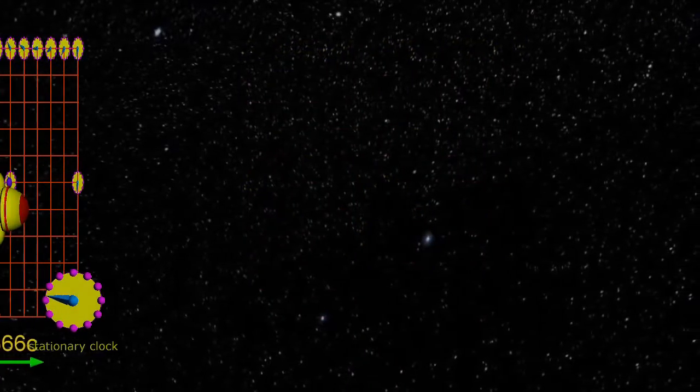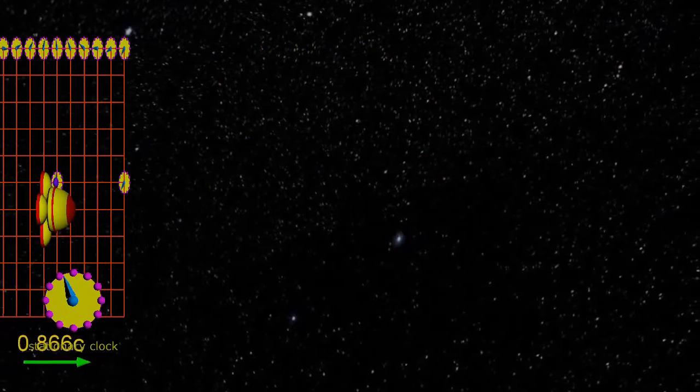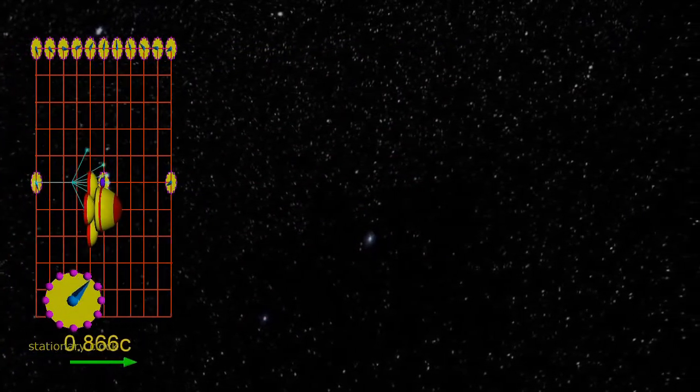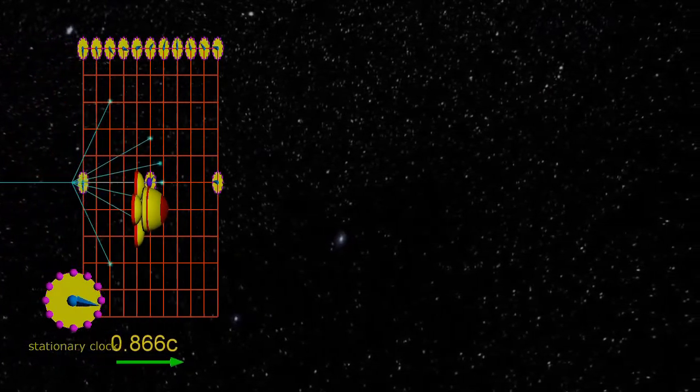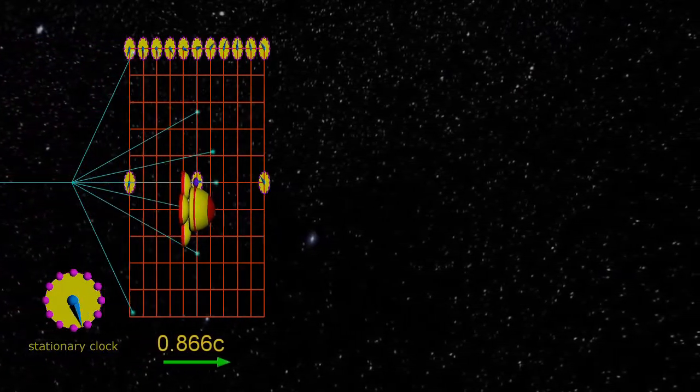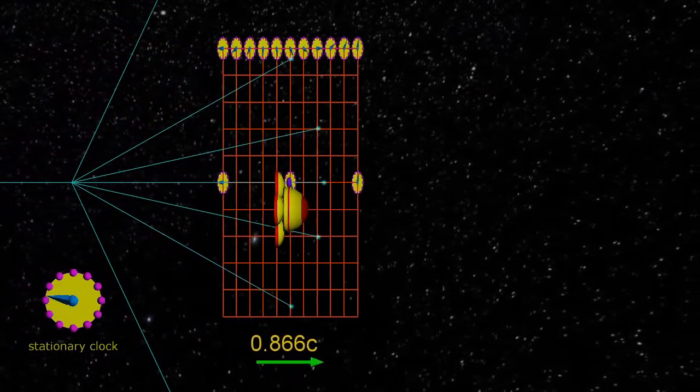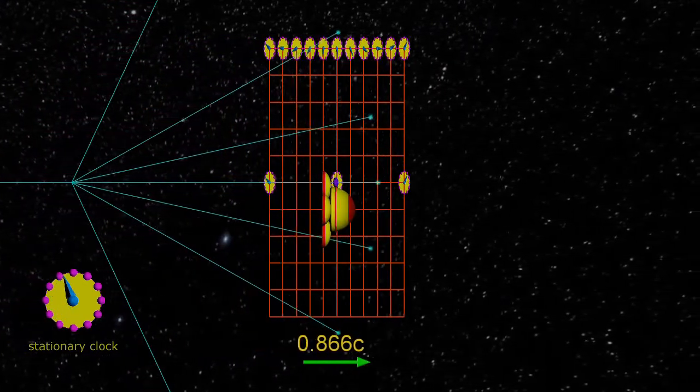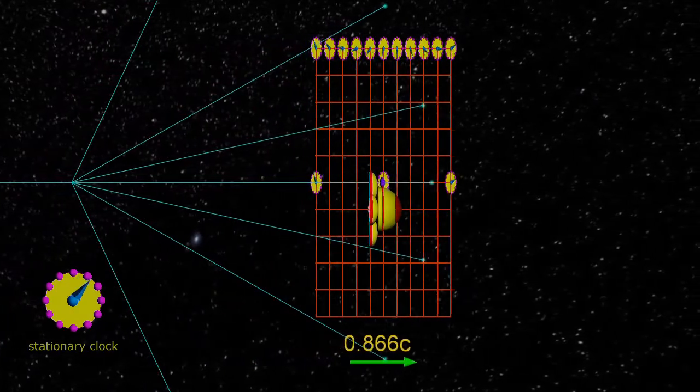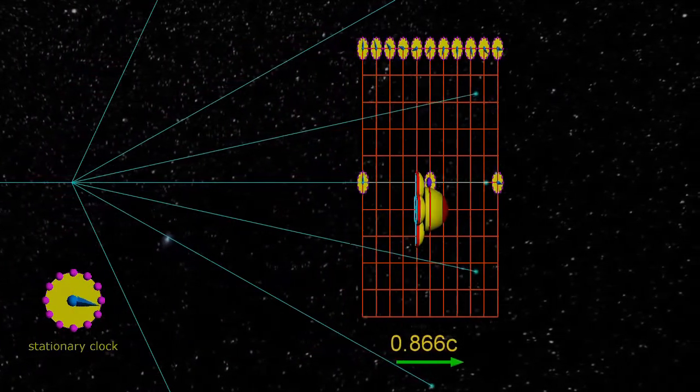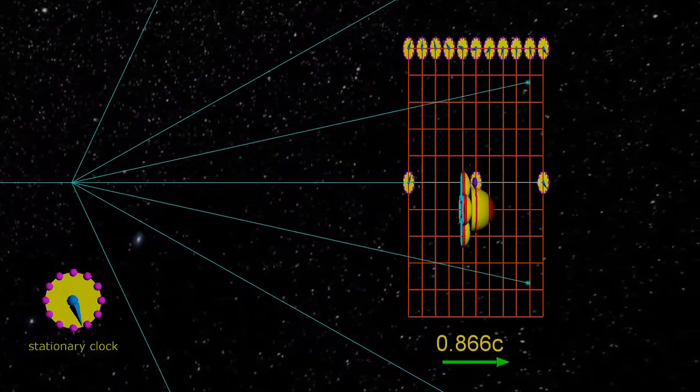There are more distortions in space and time that become more apparent at higher speeds. At 0.866c, you can see that the grid is contracted in the direction of motion. This effect was present at 0.2c, but is now much more obvious. This effect is called length contraction.